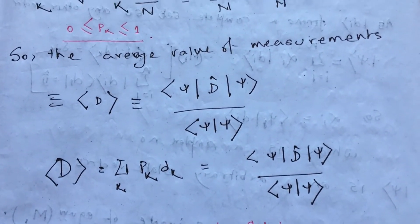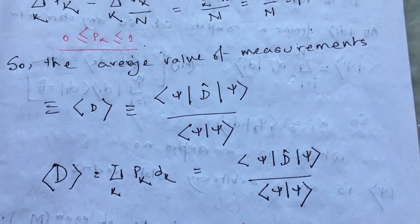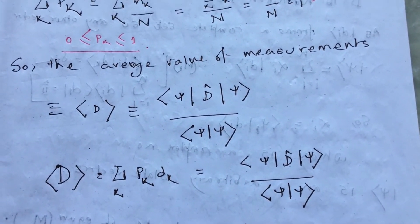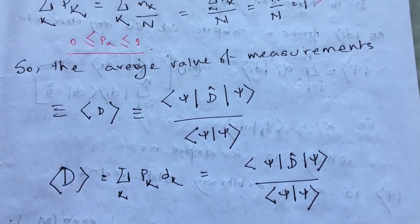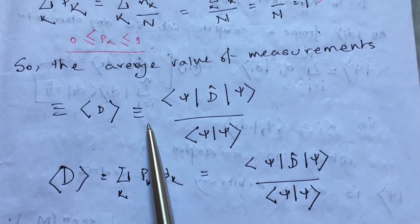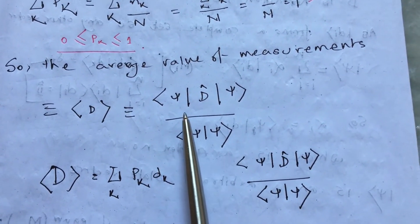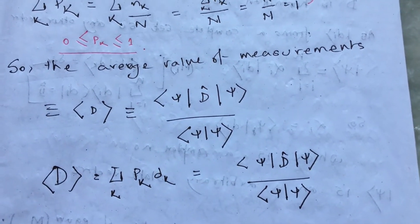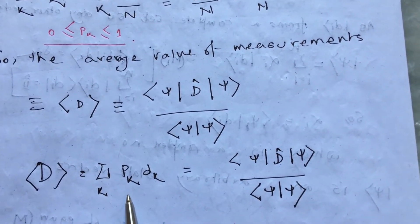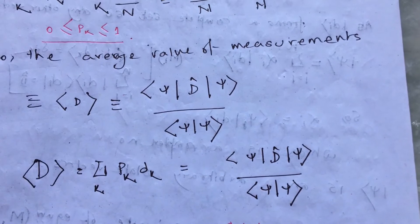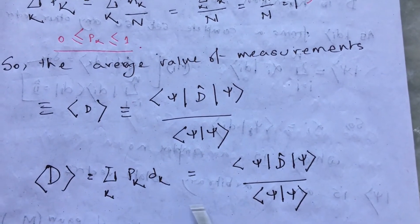Now let's discuss the expectation value. We are talking about average values because each measurement procedure will give one particular eigenvalue. The expectation value is an axiom — a starting point of any argument. We define the expectation value, and in terms of probability it is: sum over k of pk·dk. Either form can be used to define the expectation value.